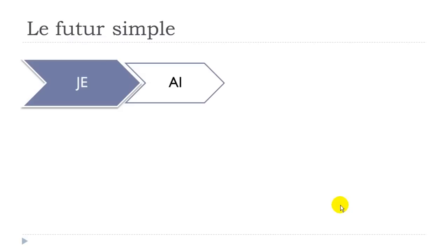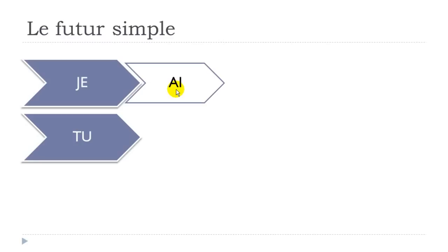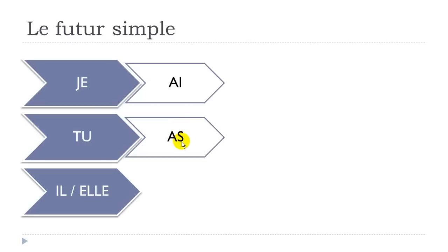Example with 'choisir' (to choose), second group: 'je choisirai,' 'tu choisiras,' 'il choisira,' 'elle choisira,' 'nous choisirons,' 'vous choisirez,' 'ils choisiront,' 'elles choisiront.' Same principle — keep the infinitive and add endings.